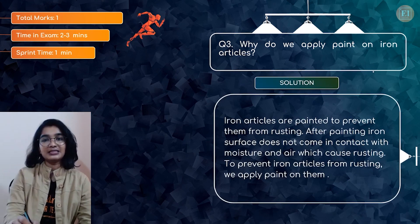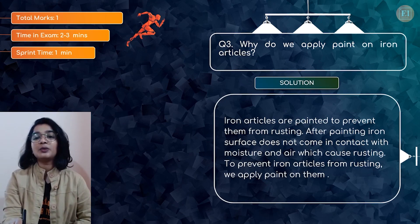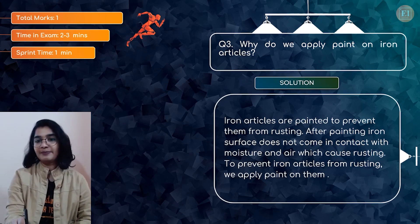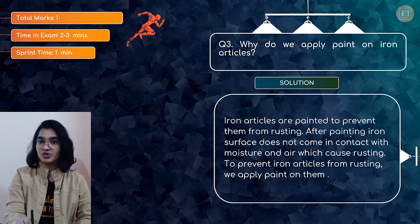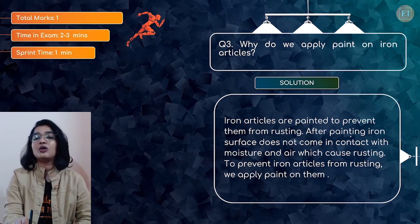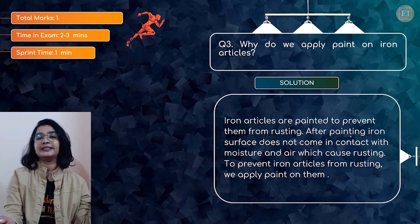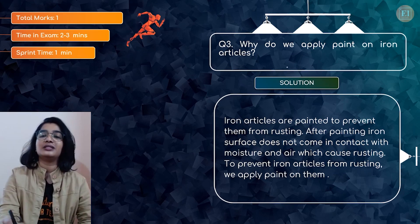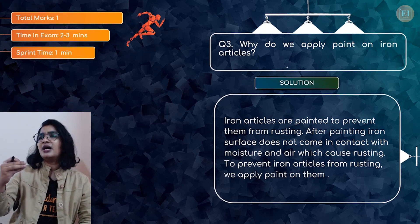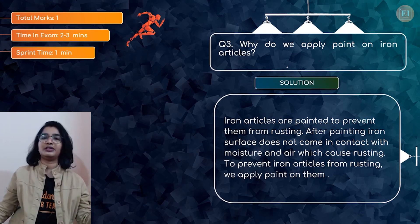So what's the answer? We took less than a minute. Iron articles are painted to prevent them from rusting. After painting, the iron surface does not come in contact with moisture and air, which causes rusting. To prevent iron articles from rusting, we apply paint on them. This is the answer you have to write for these kinds of questions. Similarly, why do you apply grease to your cycle chain? To prevent it from rusting.